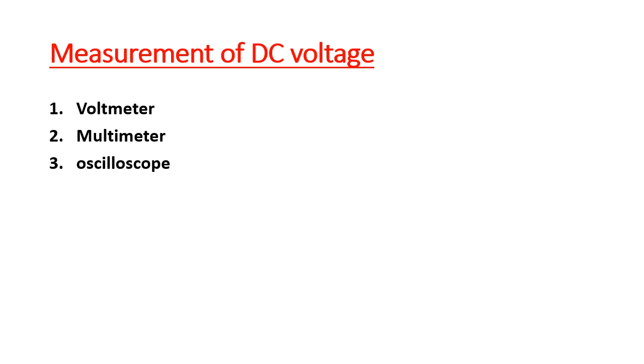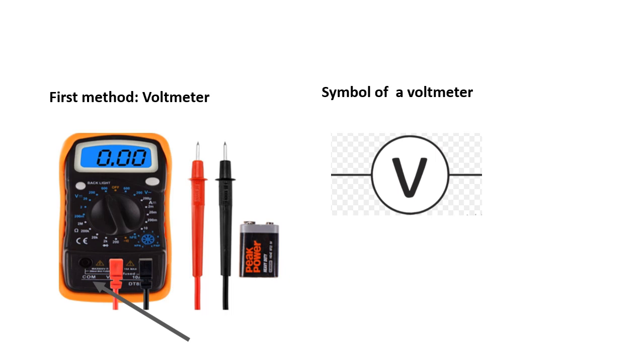How do we measure a DC voltage? A DC voltage could be measured using a voltmeter, multimeter, or oscilloscope. So, the first method to measure the voltage is the voltmeter, whose symbol is shown on the figure. As shown, the voltmeter has two terminals. One called com-terminal, the negative terminal of the voltmeter, and the other is the positive one.